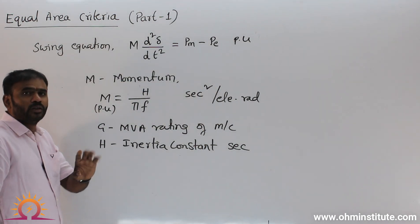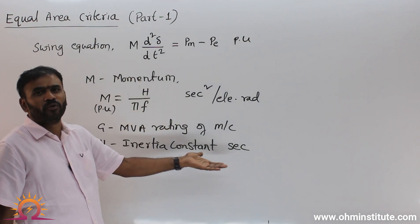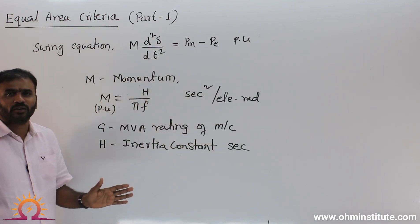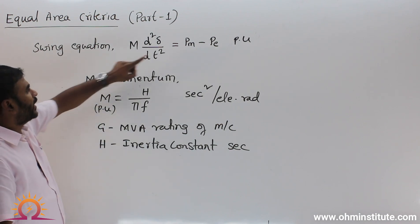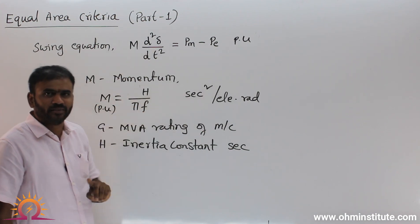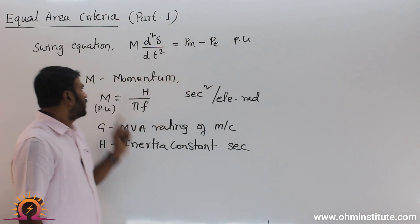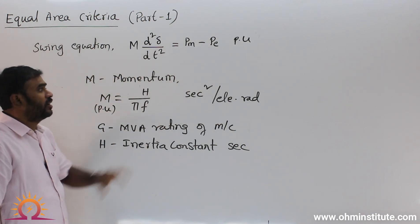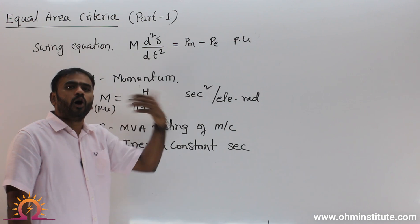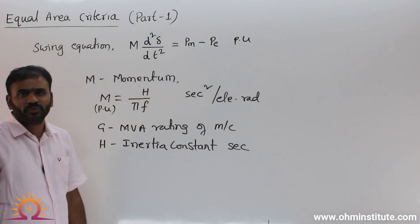In per unit form, the units of M become seconds squared per electrical radian — not mega joule-seconds. So be careful. The swing equation can be written in per unit form or in megawatt form. The only difference is: in per unit, M has units of seconds squared per electrical radian; in megawatt form, M has units of mega joule-seconds per electrical radian or megawatt-seconds squared per electrical radian.